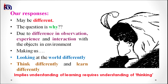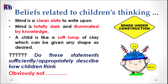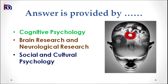It is implied that for understanding learning, it is required to understand thinking. There are different notions about how children think. The first notion is that the mind is a clean slate to write upon — also understood as the mind being totally dark and illuminated by knowledge. Another notion looks at children as a soft lump of clay which can be given any shape as desired. However, these statements do not sufficiently describe how children think. The answers are provided by cognitive psychology, brain research, neurological research, and social and cultural psychology. Thinking is a complex process, and today we discuss cognitive psychology and the prominent psychologist Jean Piaget, who offered a stage-specific theory of cognitive development.